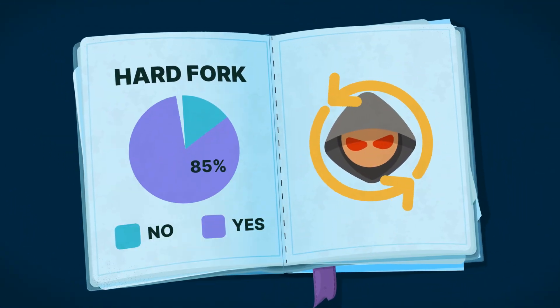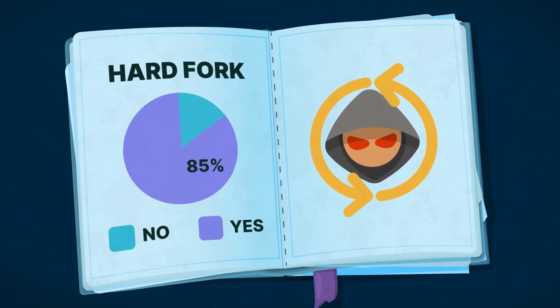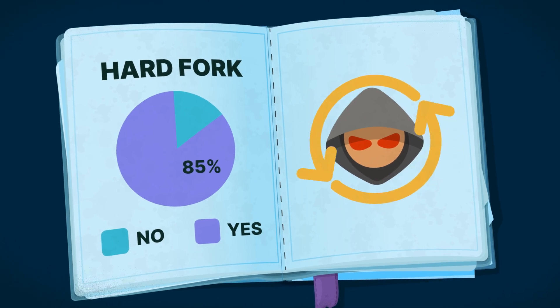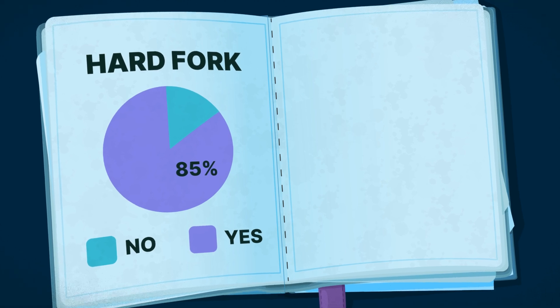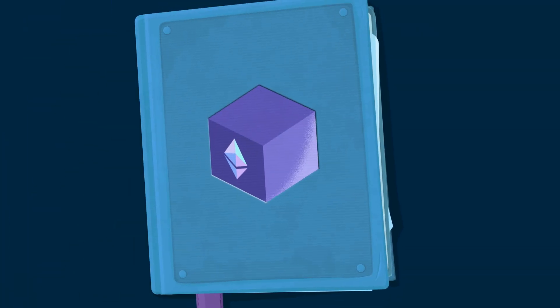Although over 85% of the community voted in favor of the hard fork, this was controversial, as it meant rewriting history, effectively erasing transactions made by the hacker from the blockchain.